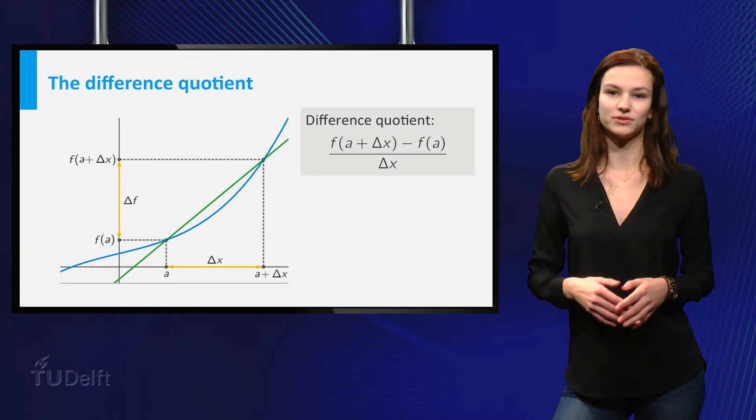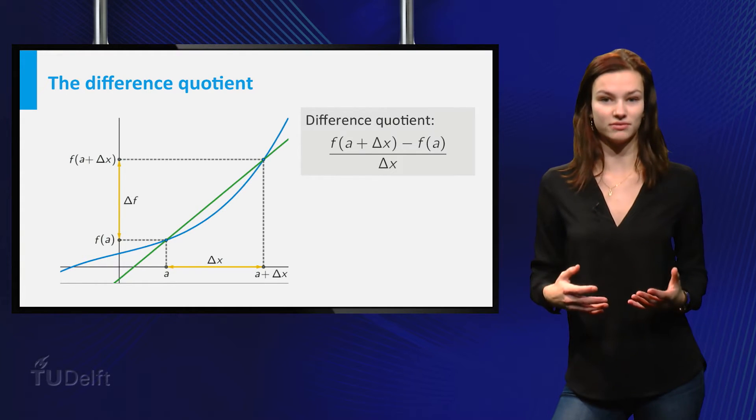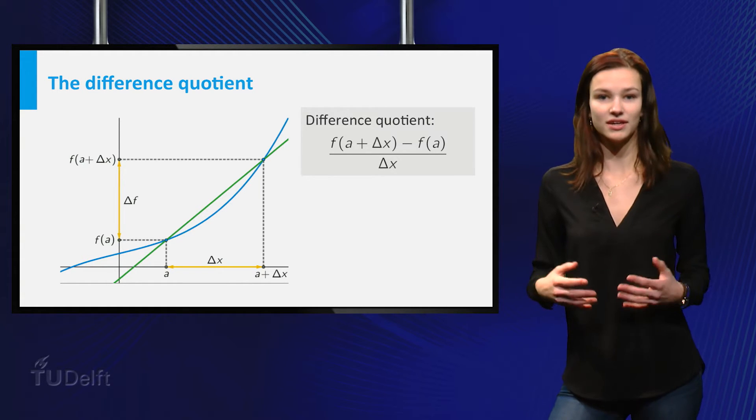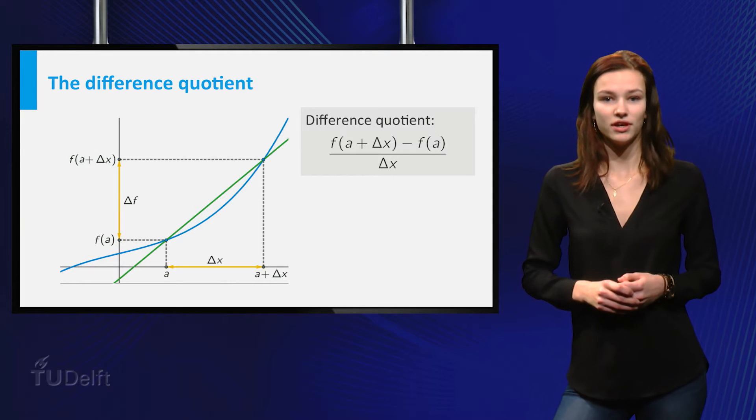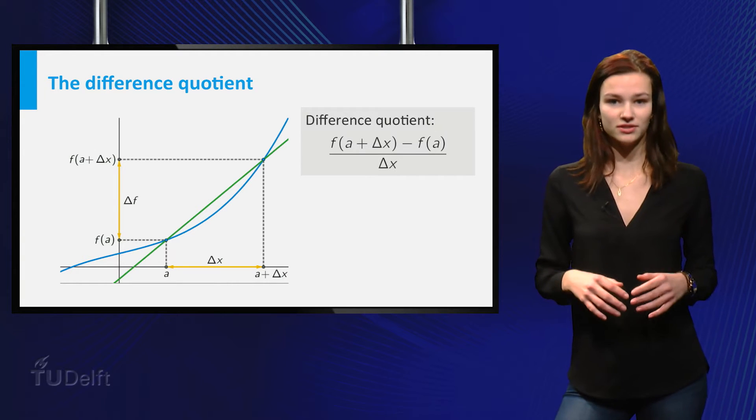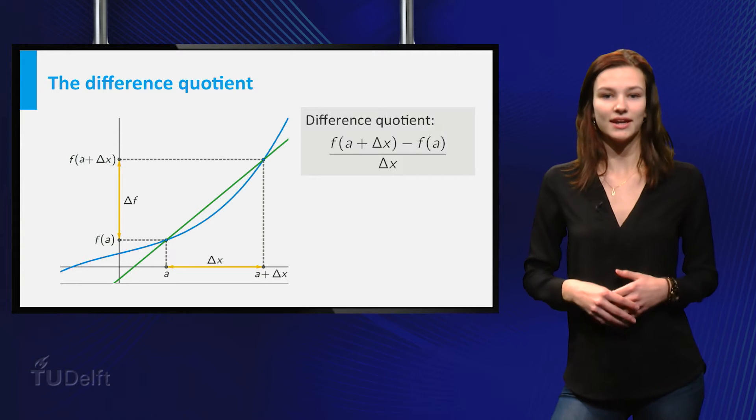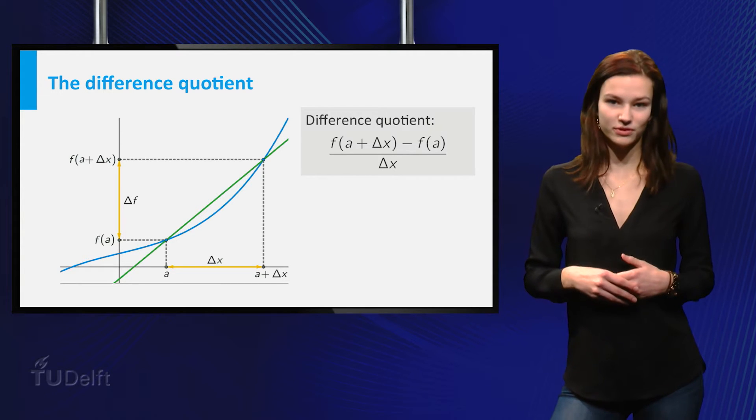The setting was as follows. Suppose a function f is given. If you move from point a on the horizontal axis to a plus delta x the function value changes. The quotient of the vertical change and the horizontal change is called the difference quotient. It can be interpreted as the slope of the green line.